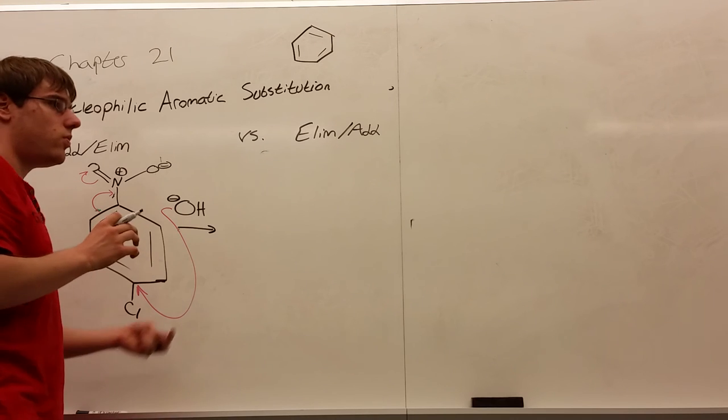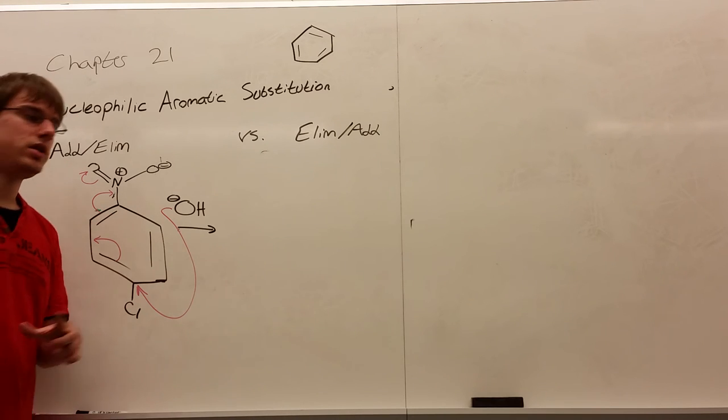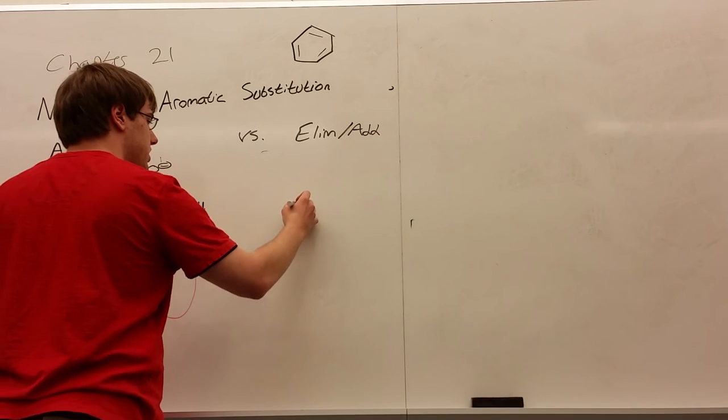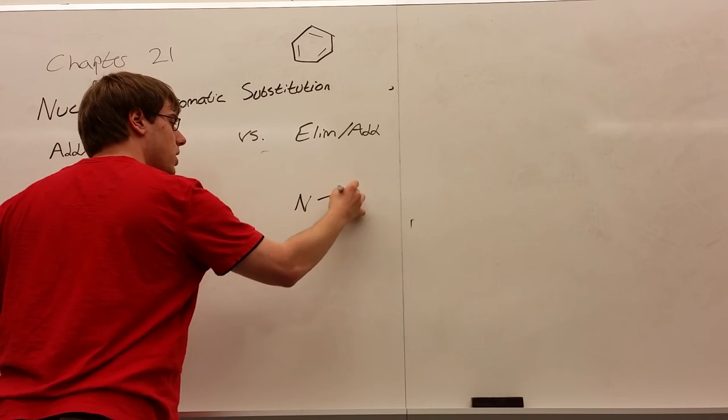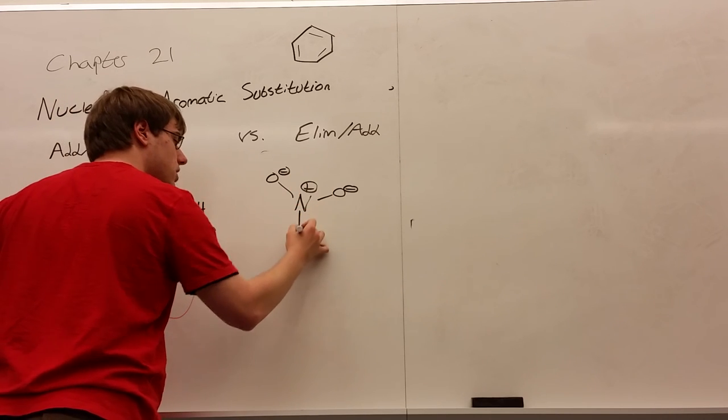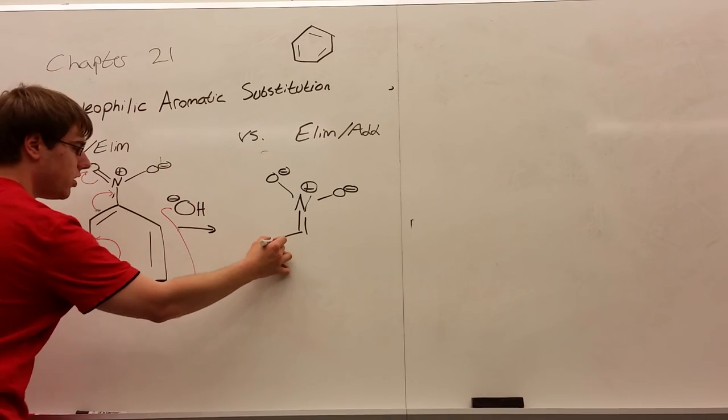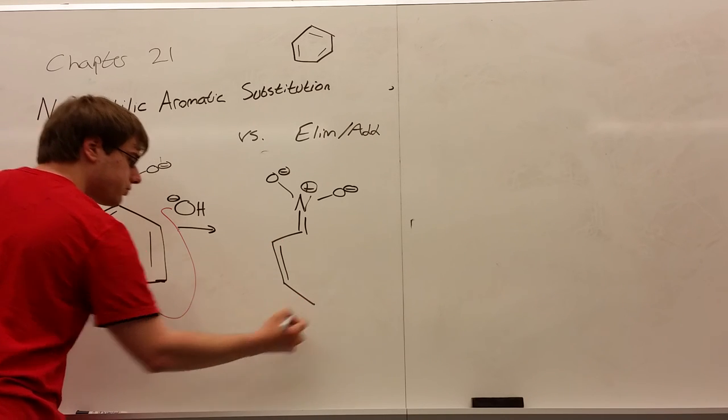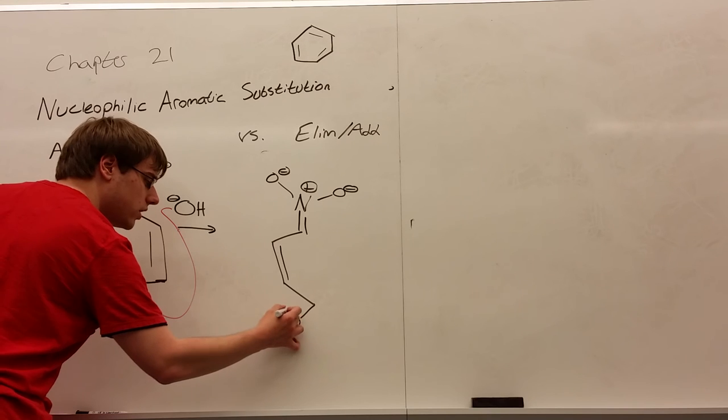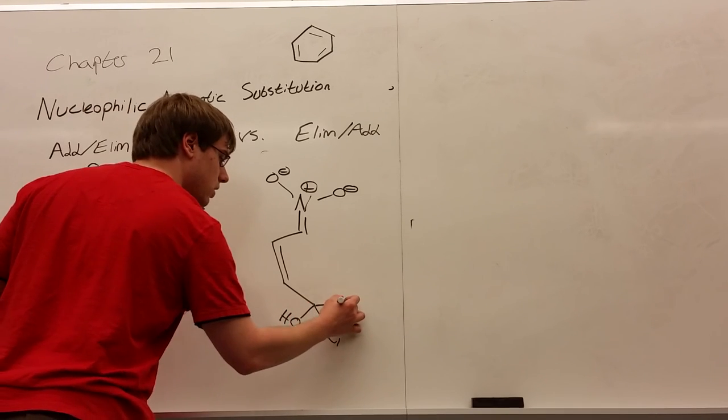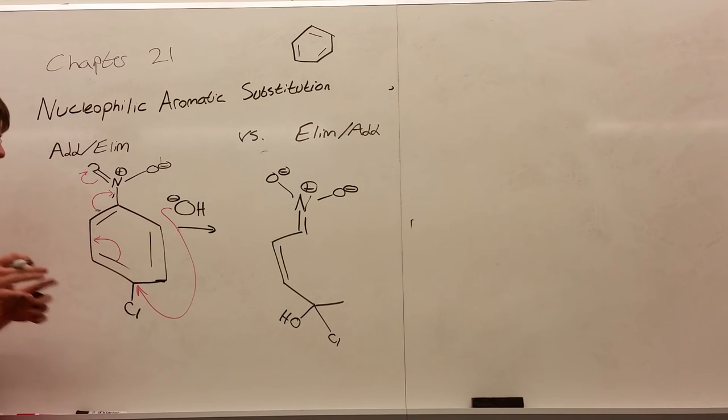Now, there are two ways you'll sometimes see the next intermediate drawn. One is just based on these arrows I gave you here, so let's draw that first because this is the intuitive one. You have an O minus, you have another O minus, you have nitrogen positive, double bond, and I resonated on the left side, so we'll keep that consistent. You have a double bond here now, we have an OH here, and you have a chlorine here.